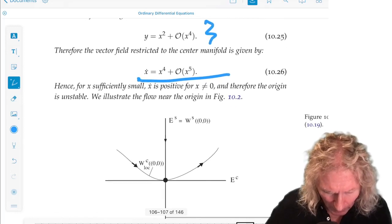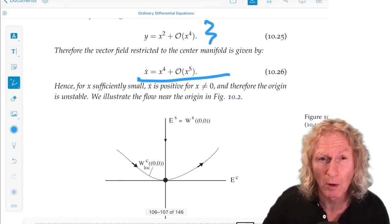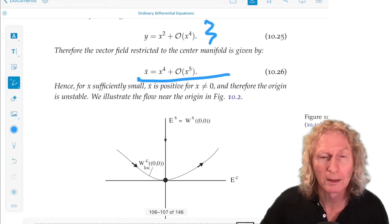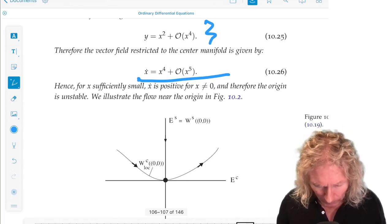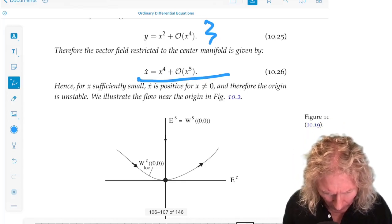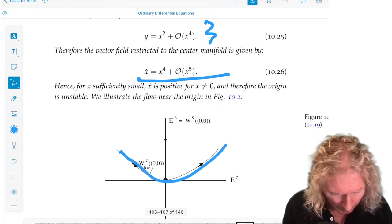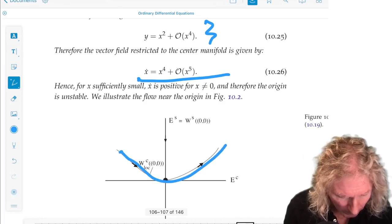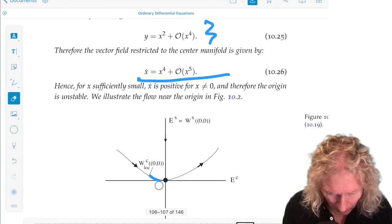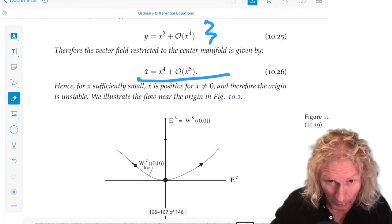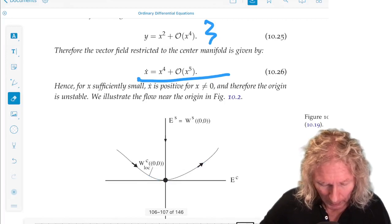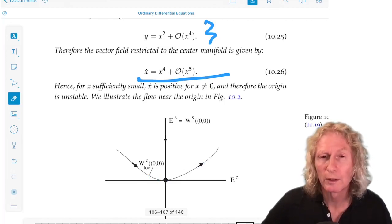We have this equation for the center manifold. So we see that for x sufficiently small, x dot is positive. So on the center manifold, this is what the flow looks like. The arrows go in this way, and so the origin is unstable.